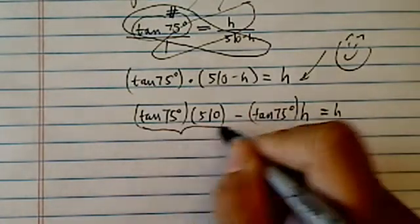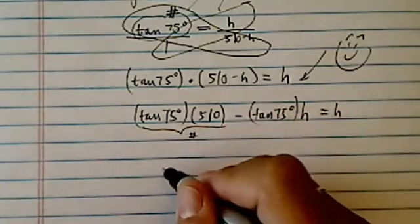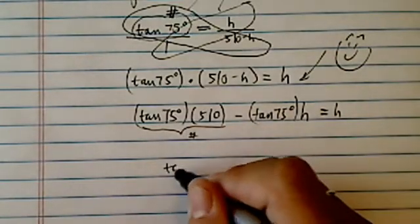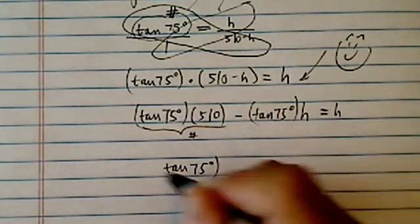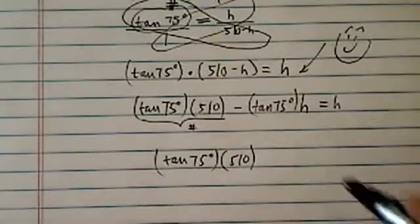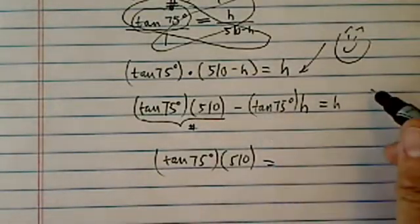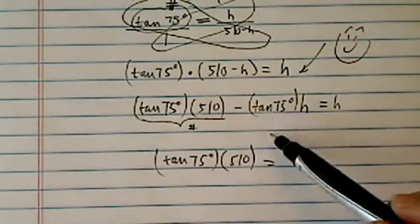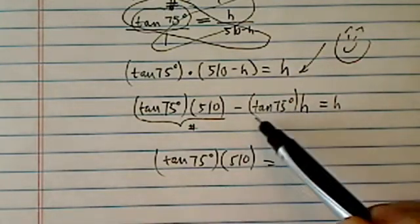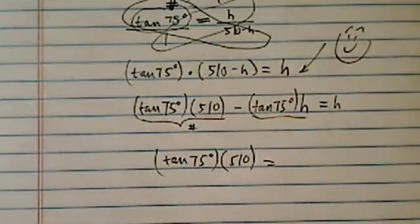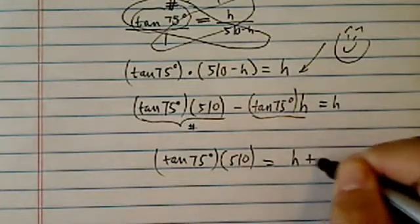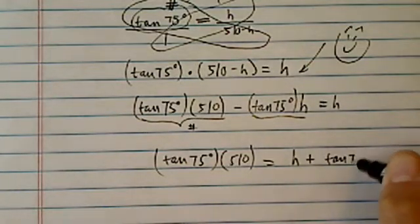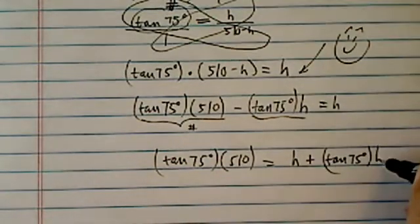Okay, so I'm going to not multiply this. I know this is a number, so I'm going to stubbornly just keep on writing it. And then on this side, I'm going to move this one over, which is equivalent of adding this thing on both sides. Okay, so I have h add tangent 75 degrees times h.